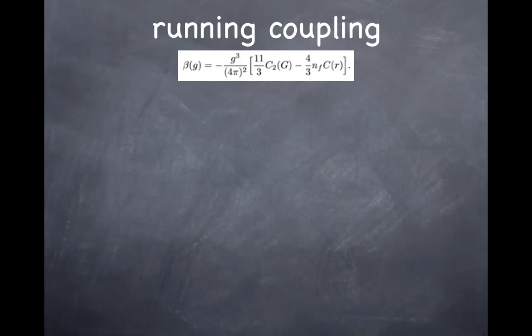At short distances, which correspond to high energies where the coupling constant is small, you can rely on perturbation theory. Exchange of the gauge boson is the same as exchanging the photon in QED, so you expect the potential to be basically Coulombic. The actual potential interpolates between two limits: at short distance you expect Coulomb potential — the only difference from QED is the strength goes with matrices T^a T^a. At long distances, when the coupling constant becomes very large and perturbation theory fails, the potential behaves linearly with distance.